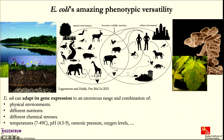The topic of today's talk is E. coli's amazing versatility. As most of you know, a simple organism like E. coli can adapt its gene expression to an enormous range and combination of environments — changes in nutrients, different stresses, temperatures, pH, osmotic pressure, and so on — in large numbers of combinations, and somehow it finds a way to adapt its gene expression to grow in all these environments.